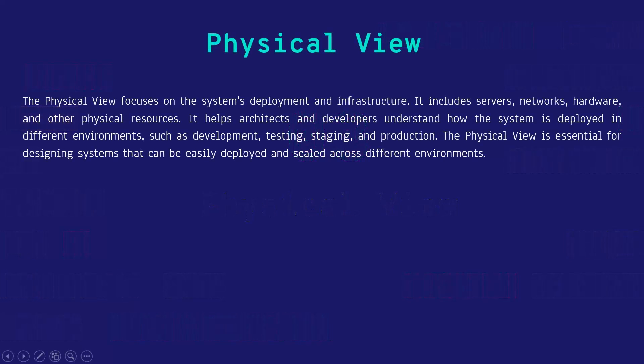The physical view focuses on the system's deployment and infrastructure. It includes servers, networks, hardware and other physical resources. It helps architects and developers understand how the system is deployed in different environments such as development, testing, staging and production. The physical view gives us the information to understand what kind of resources we need to handle our application and scale across different environments.